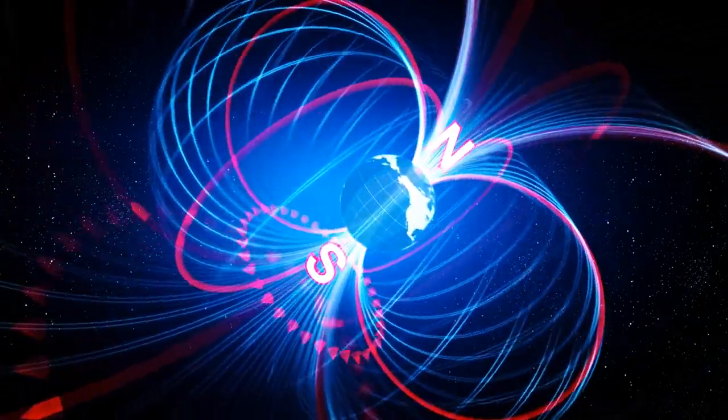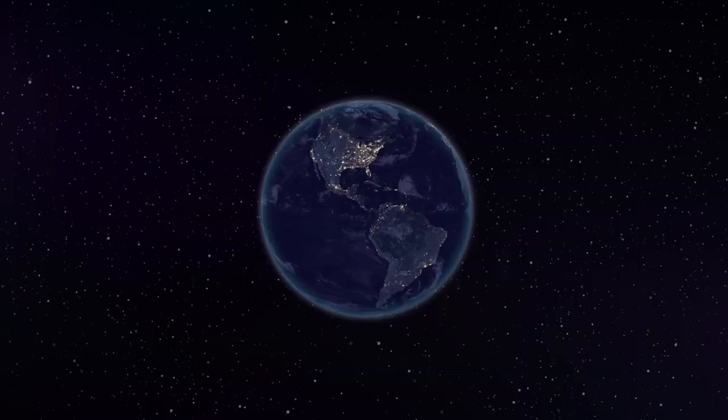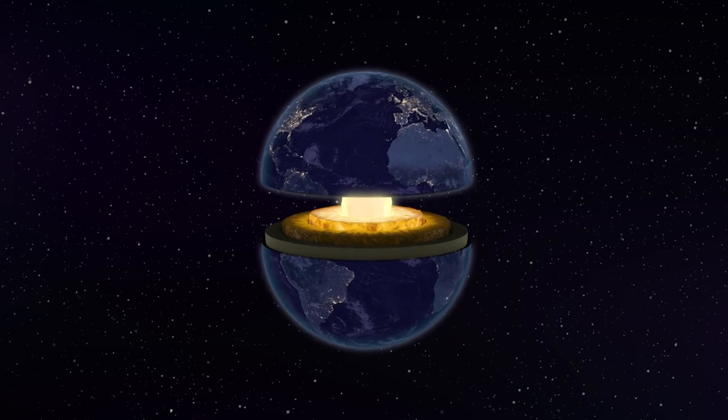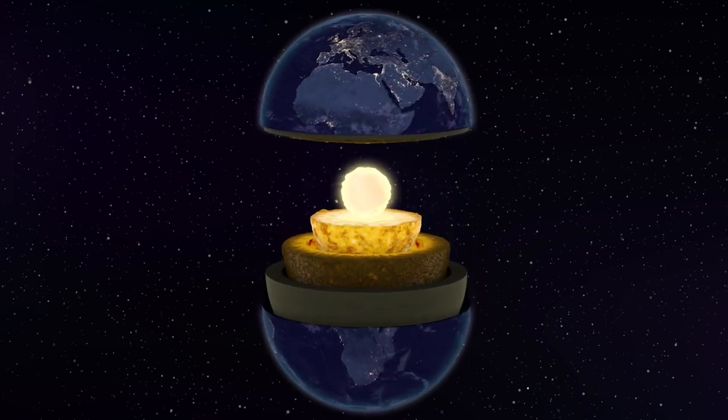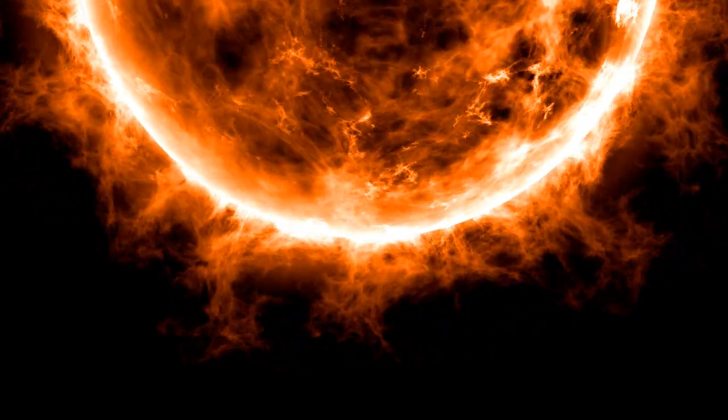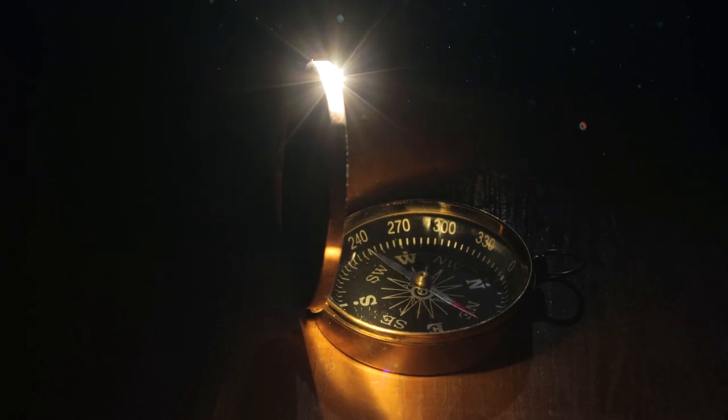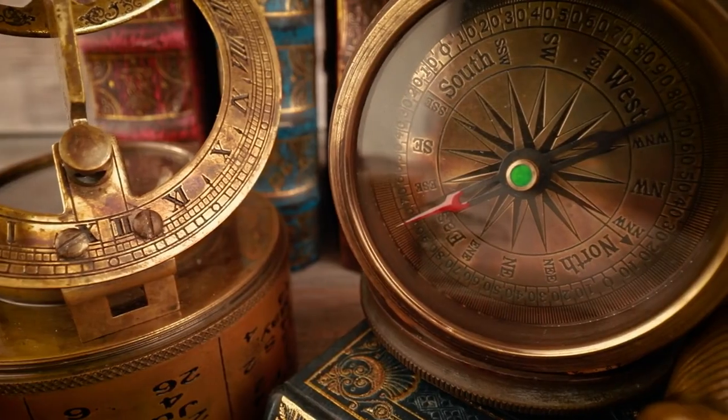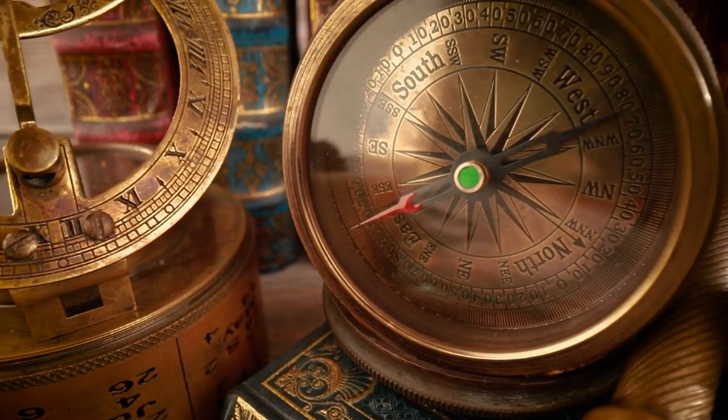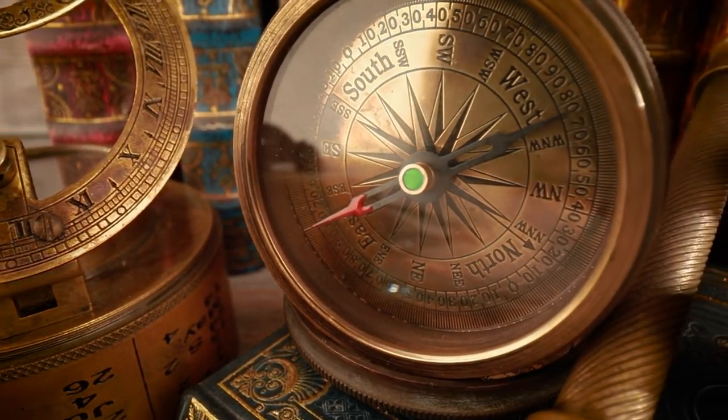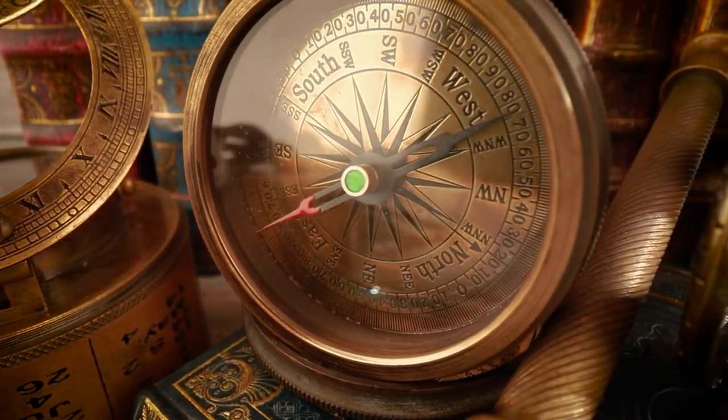Did you know that Earth itself is a giant magnet? The movement of molten iron in Earth's core generates a magnetic field that extends into space. This magnetic field protects us from harmful solar radiation and helps guide navigational compasses. A compass works because its needle is a small magnet that aligns with Earth's magnetic field, always pointing toward the magnetic north pole.